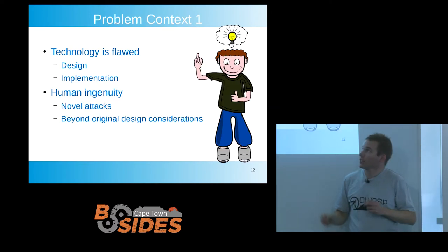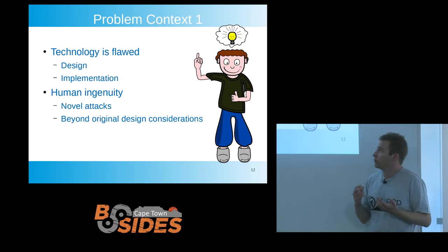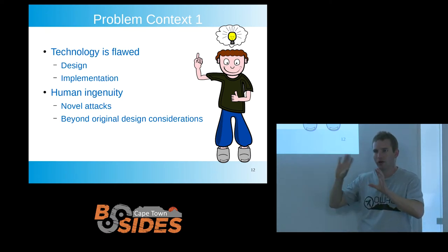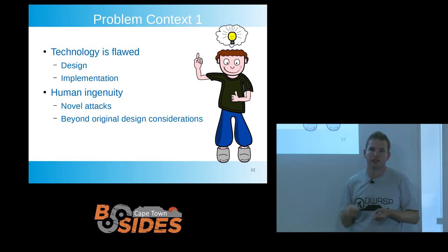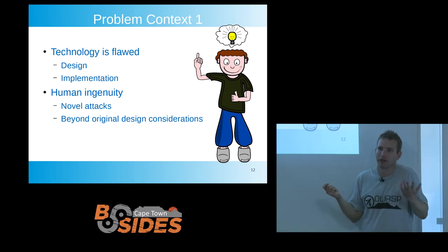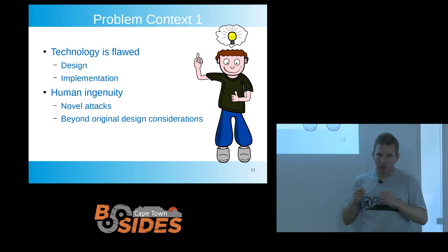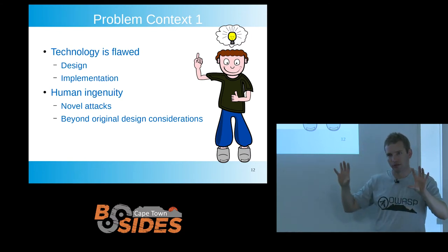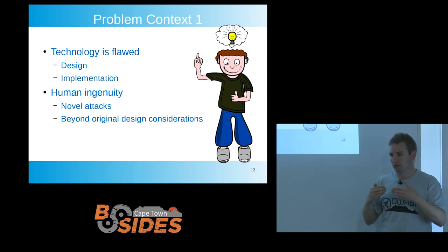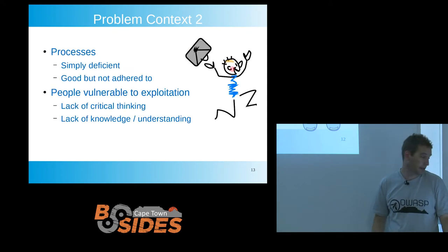The problem context: technology is flawed — either the design doesn't account for or protect against something, or the implementation is flawed. For example, if we assume perfect cryptography, but there's the famous implementation error and you can grab the keys out of memory — well now you don't need to break the encryption, you just grab the keys. Human ingenuity produces novel attacks. People are always thinking about things, poking at them from different angles. If you have a design catering for a certain attack scenario and somebody thinks of something you've never thought about, the odds that you've protected against it start to go down.